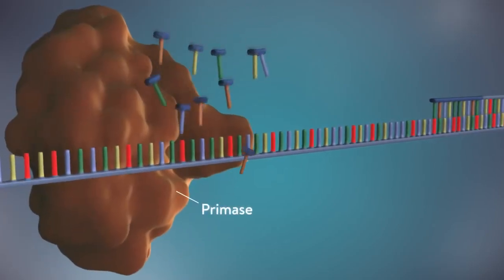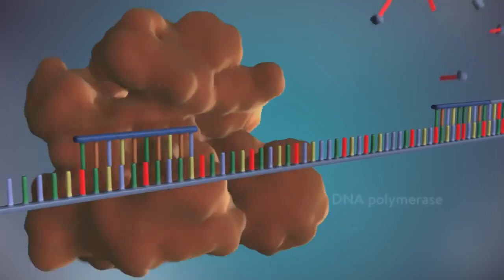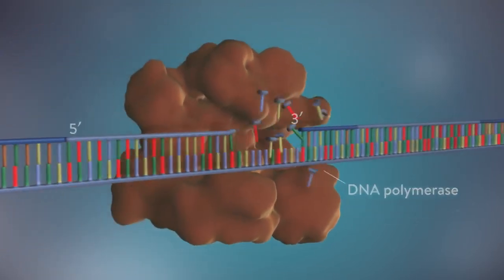The next primer is then added further down the lagging strand. Another Okazaki fragment is then made and the process is repeated again.